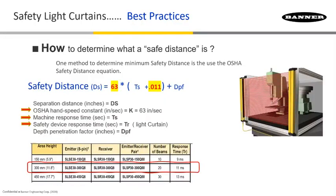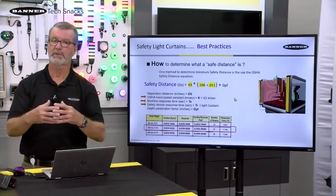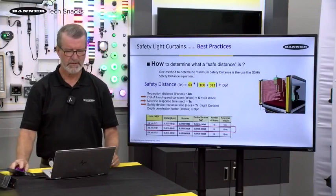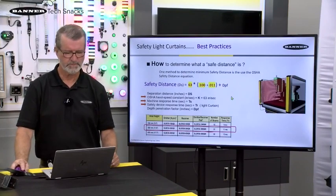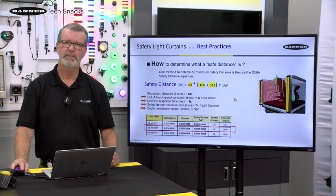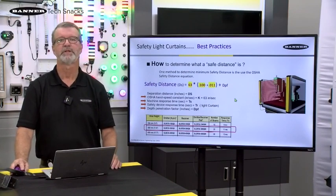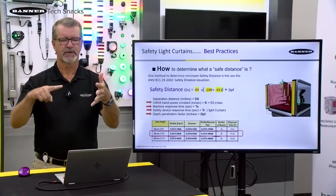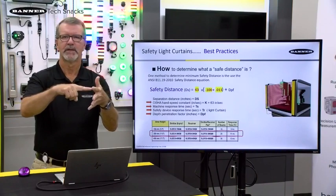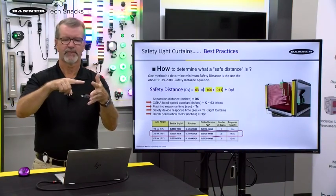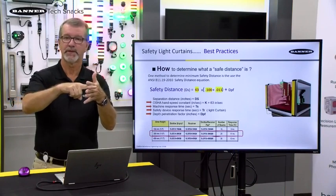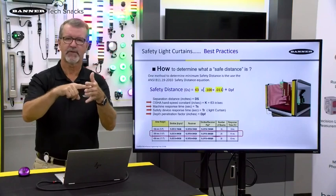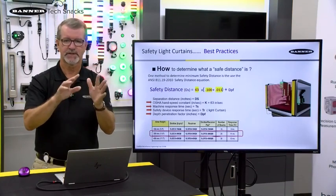Next is the machine safe time, which is going to be how long it takes — once the light curtain is breached — for the rest of the machine to come to a stop. I'm going to use 100 milliseconds here. Next is something called a DPF, or Depth Penetration Factor. DPF accounts for the situation where if you were unlucky enough to start going in between beams, that formula determines how much further you could get into the curtain before it finally shuts down.